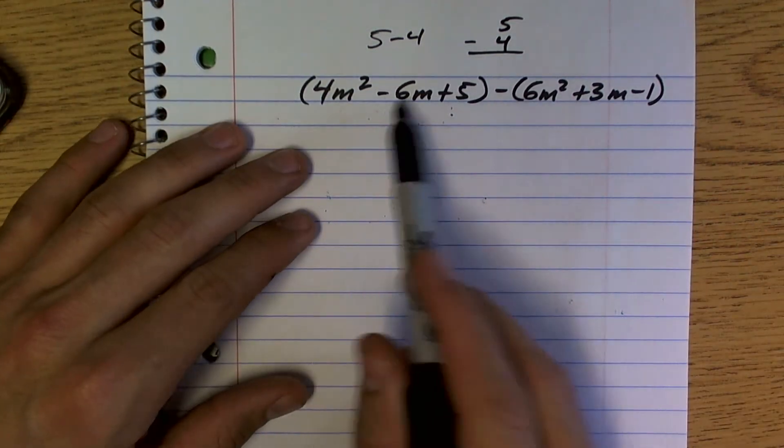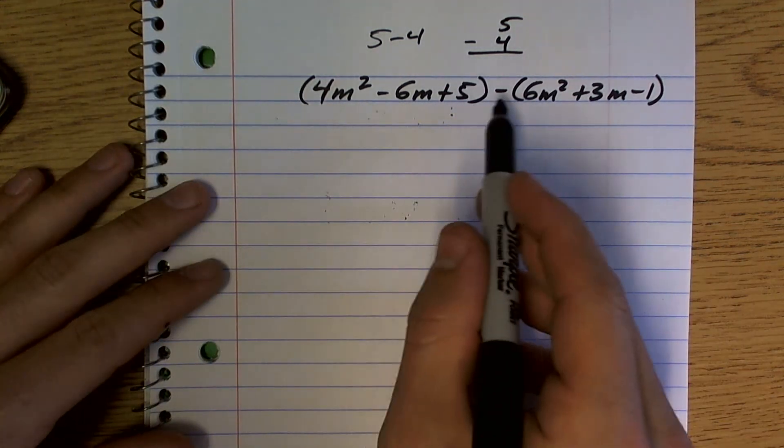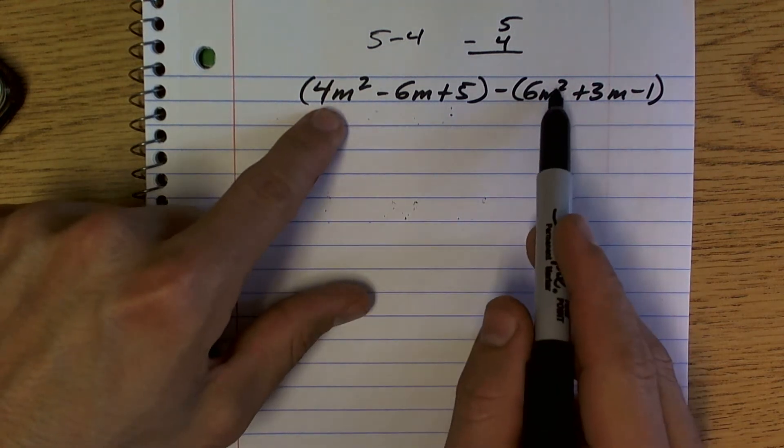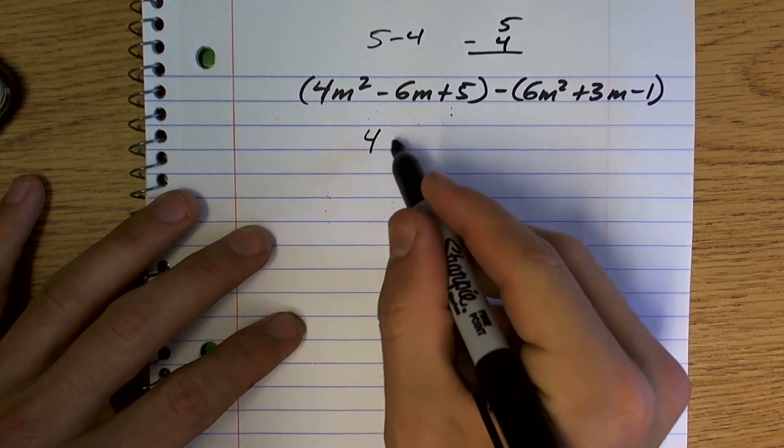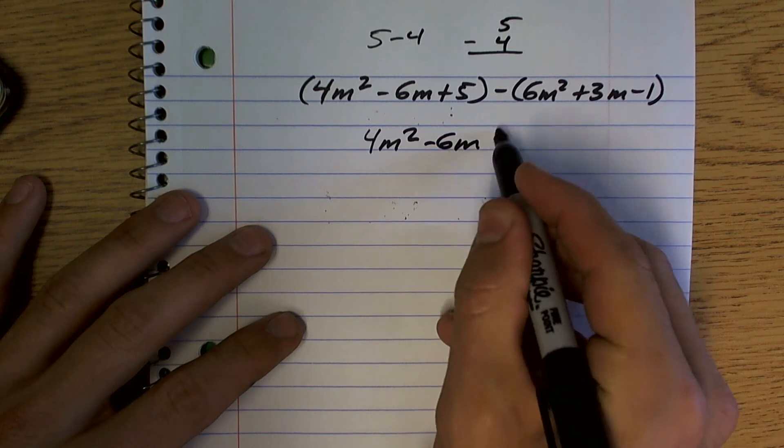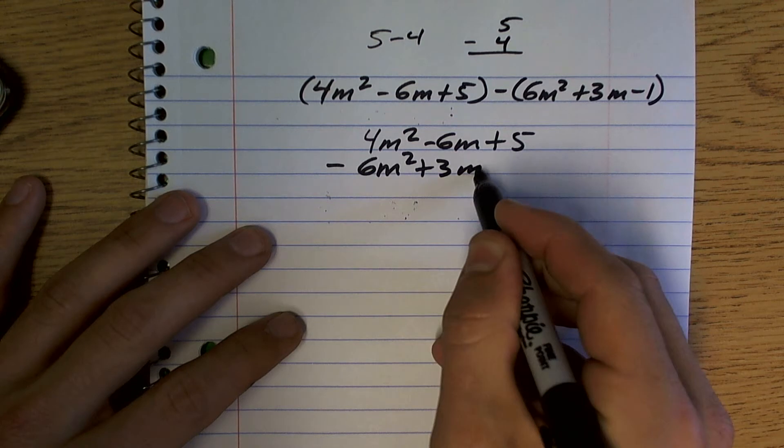But the first way that I want to show you is just to set it up vertically and make sure that you have them aligned because remember, I can only subtract like terms. An M squared, I can only subtract from an M squared. An M, I can only subtract. So what I'm going to do is I'm just going to rewrite this problem with it written vertically. And that's just going to help me see this problem in the right light.